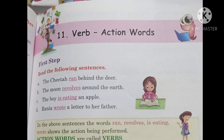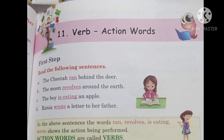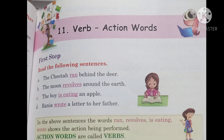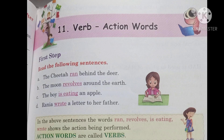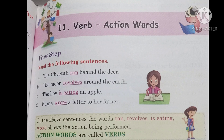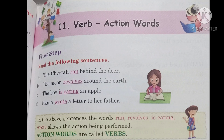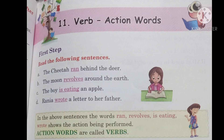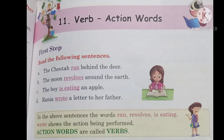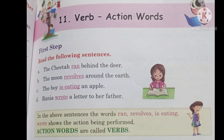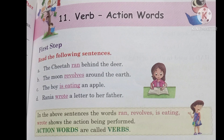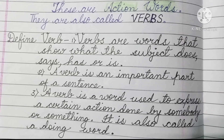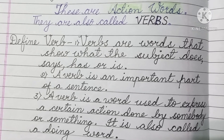Let us understand with the use of few examples. Read the following sentences. Words show the action being performed by different people or things. So the action words are known as verbs. They are all action words or doing words. We also call them as verbs.